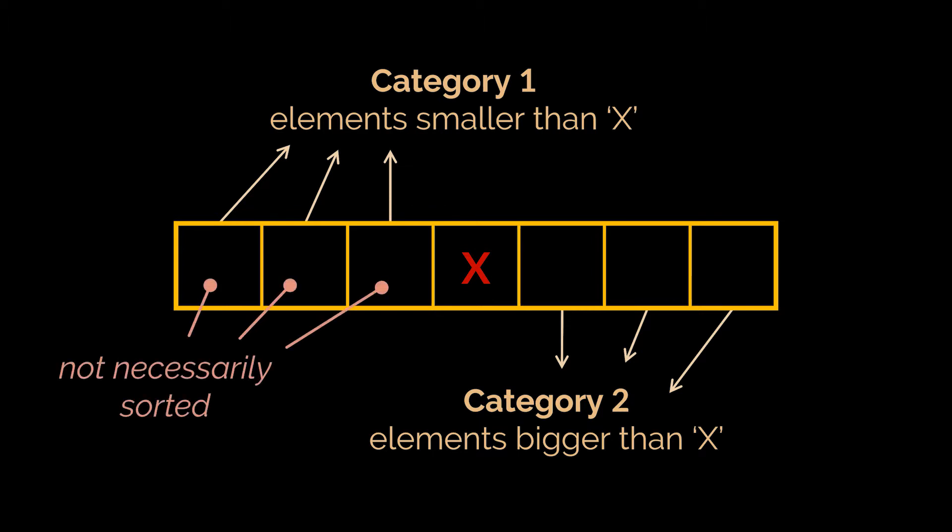We don't know how the three smaller elements should be placed exactly, or the three bigger elements, but we do know that there are three elements before and three elements after this particular element. When this same logic is repeated on the two remaining categories created in the array, this process is what we refer to as the quick sort algorithm.